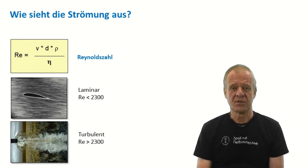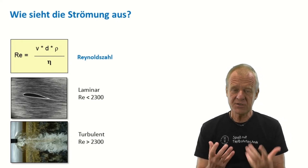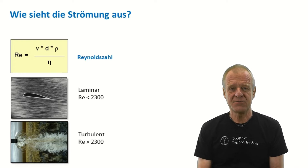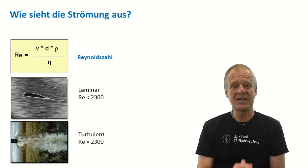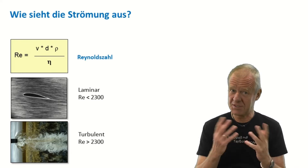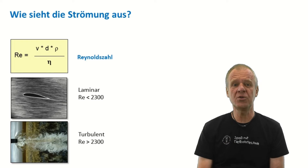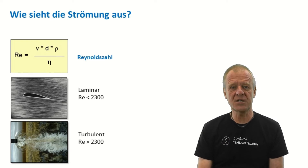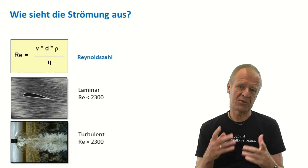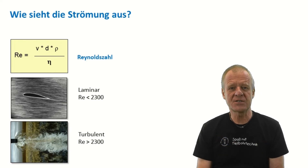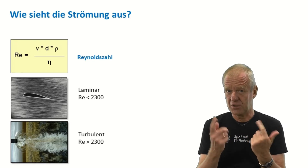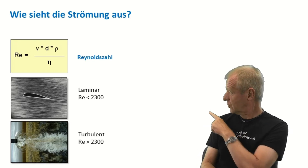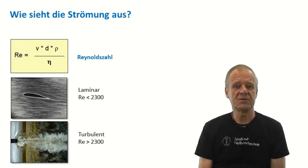The Reynolds number tells us a lot about the flow regime in the pipe. Small Reynolds numbers indicate laminar flow, which causes only little pressure loss, while large Reynolds numbers show that the flow is turbulent and that we should expect larger pressure losses.